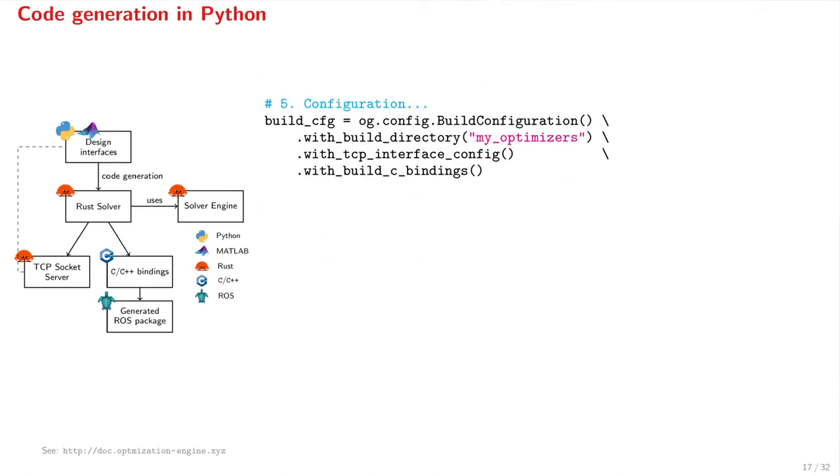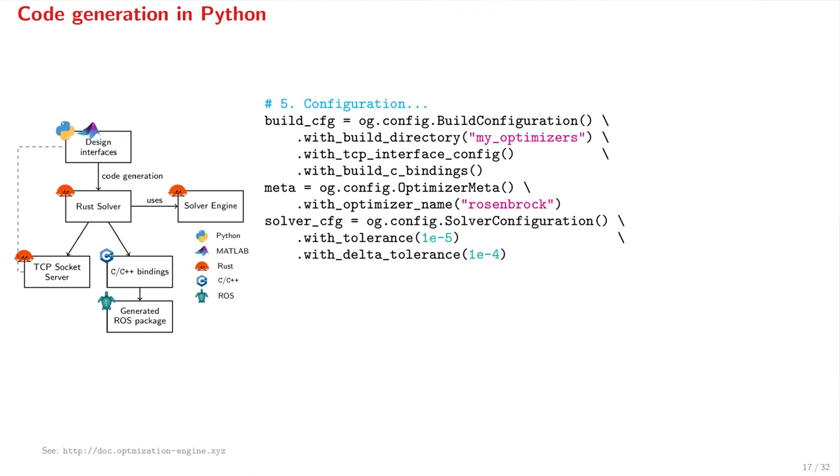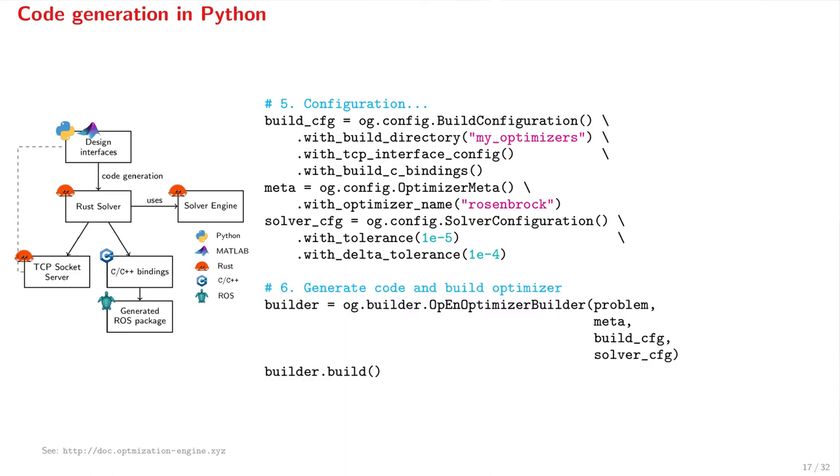Let us now generate a parametric optimizer for this problem. Firstly, we need to provide some configuration, such as the desired path where the optimizer files will be stored, some optional metadata such as the name of the optimizer, and some solver parameters such as tolerances. We then pass all these to OPEN Optimizer Builder and call build. This will generate and compile a parametric optimizer in Rust, that we will be able to call from Python and other frameworks.